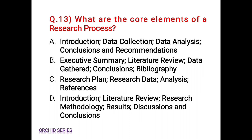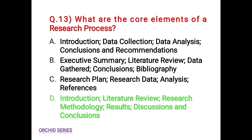What are the core elements of a research process? Option A: introduction, data collection, data analysis, conclusions and recommendations. Option B: executive summary, literature review, data gathered, conclusions, bibliography. Option C: research plan, research data analysis, references. Option D: introduction, literature review, research methodology, results, discussions and conclusions. Option D is the correct answer. A research process starts with introduction and ends with conclusions and references, involving introduction, literature review, research methodology, results, discussions and conclusions.